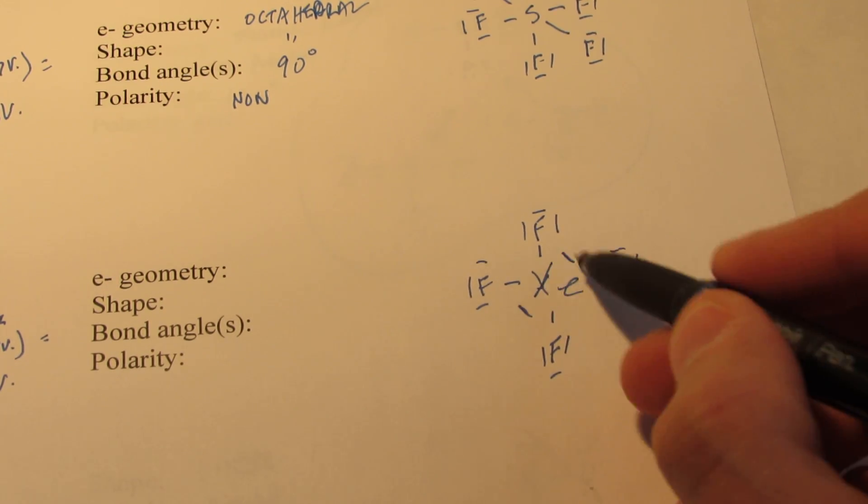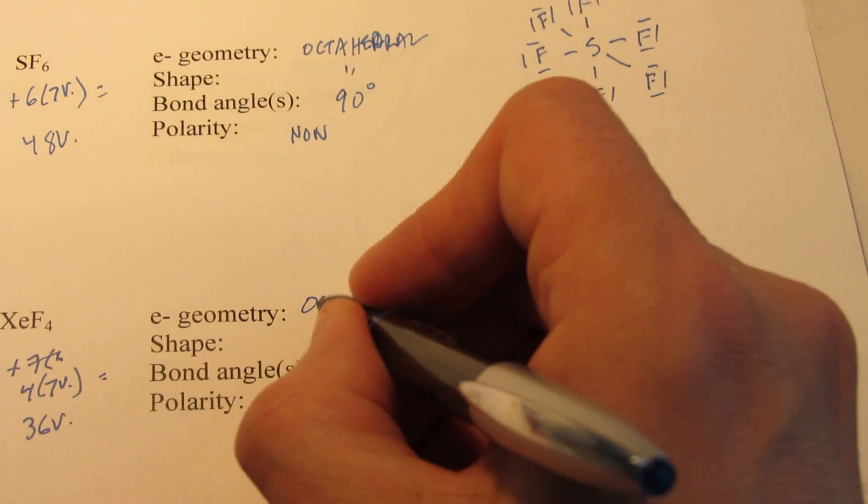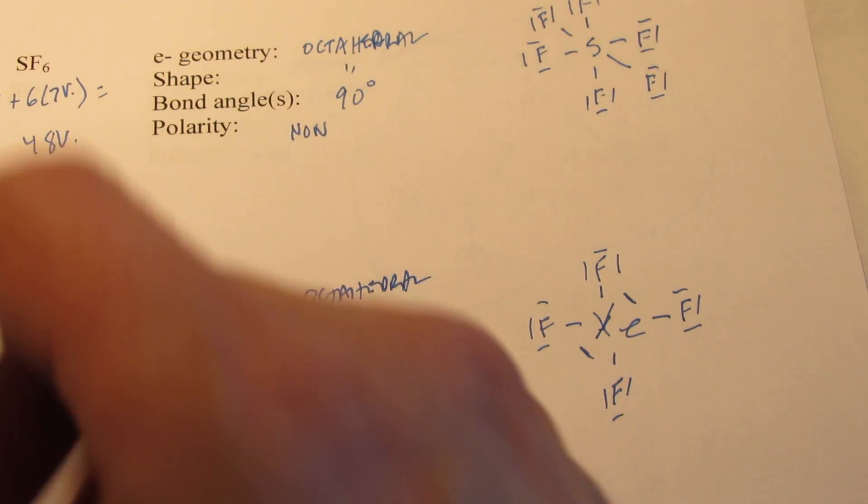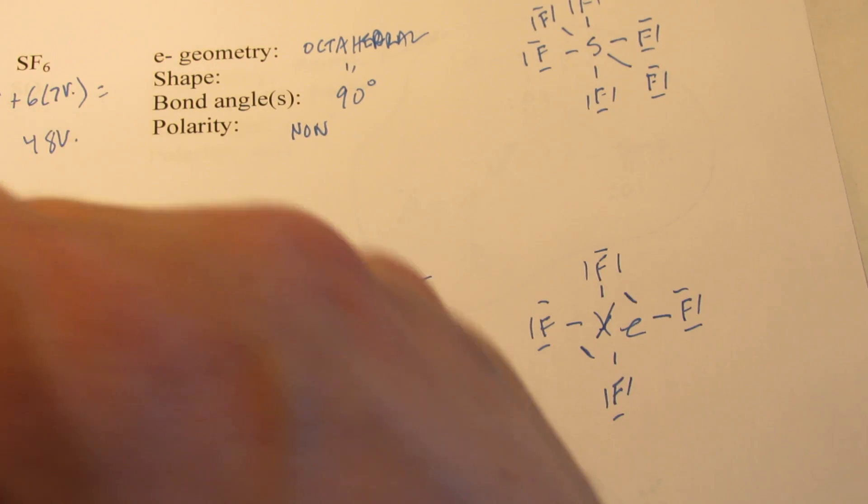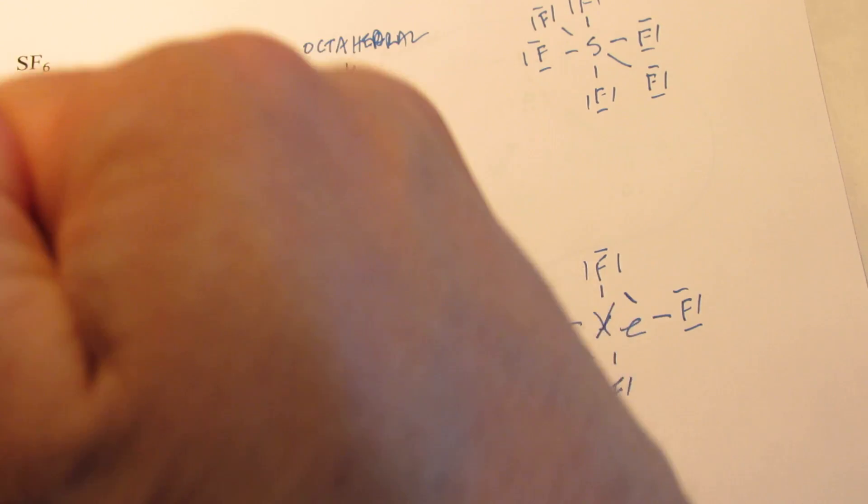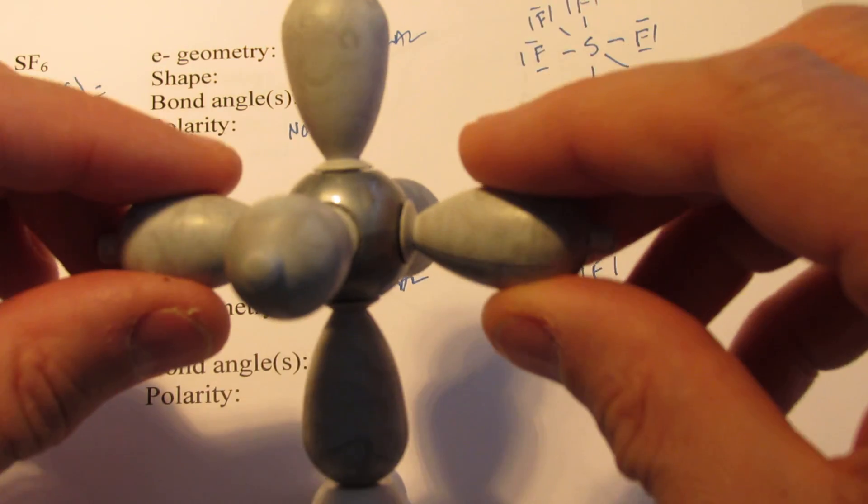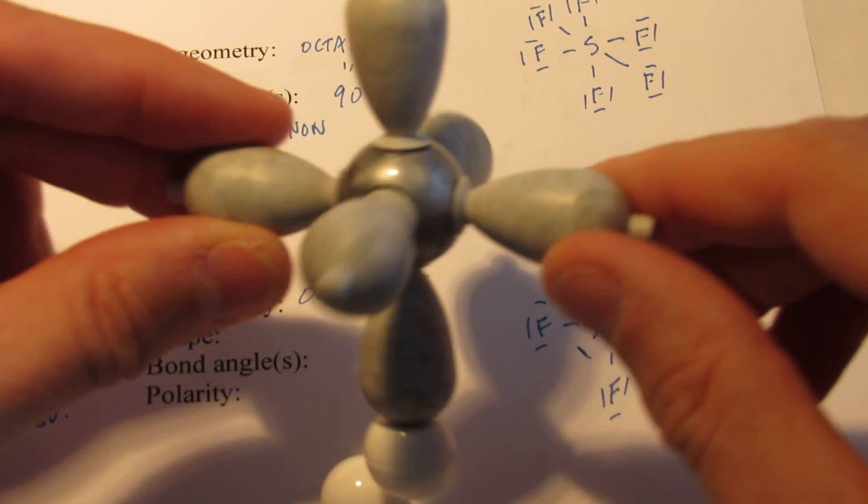It has six energy levels. So it definitely has a D-sub level to expand into. Alrighty. Now, the electronic geometry, since there are six pairs, is octahedral. Right? We have six pairs. But this time, not all six are bonding. Only four of them are bonding this time. So we have to find a nice low energy situation for four of them to bond. So we have six pairs all together.